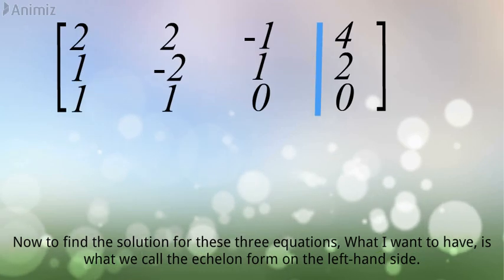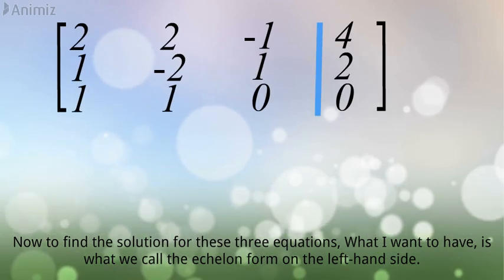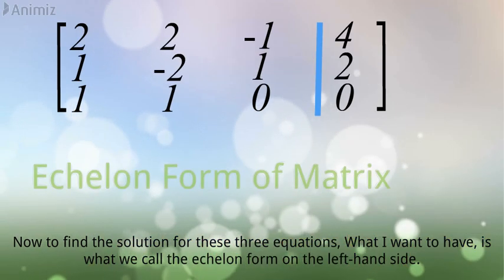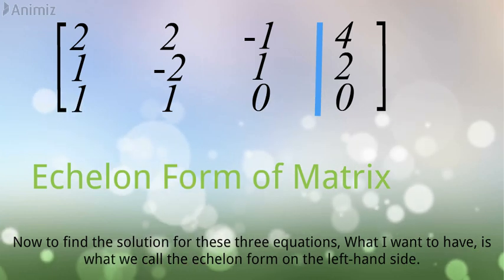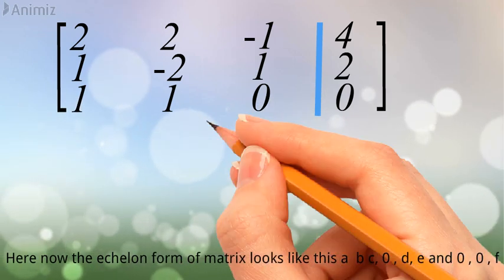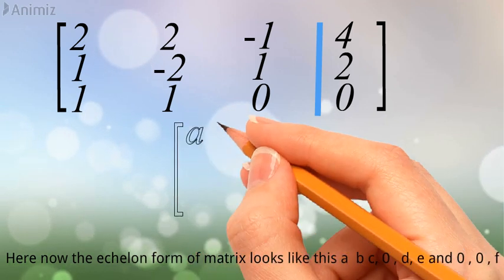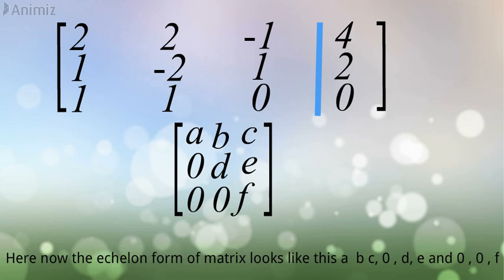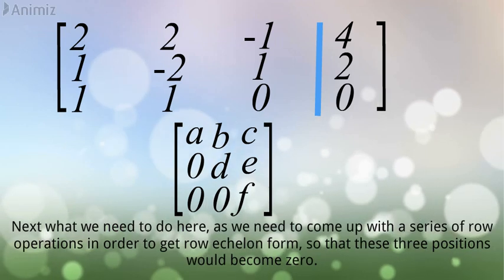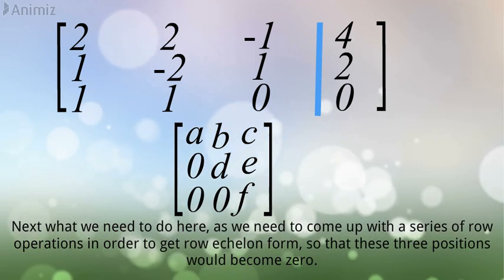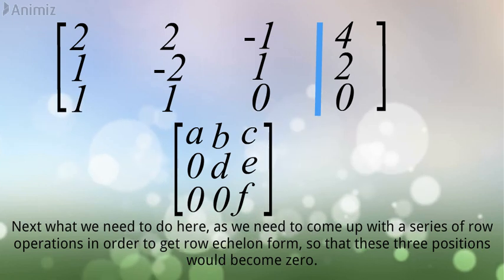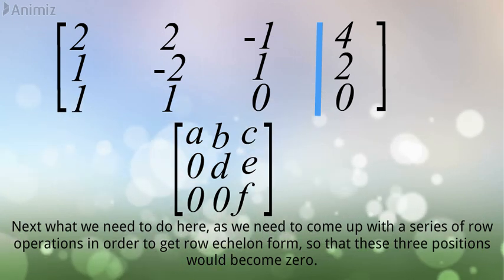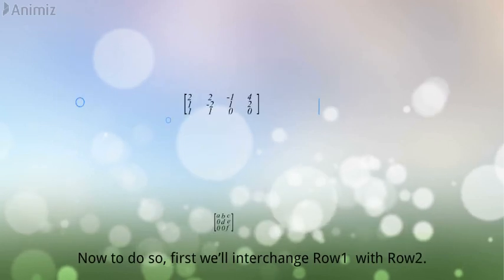Now to find the solution for these three equations, what I want to have is what we call the echelon form on the left hand side. Here now the echelon form of matrix looks like this. Next what we need to do here is we need to come up with a series of row operations in order to get row echelon form so that these three positions would become 0.